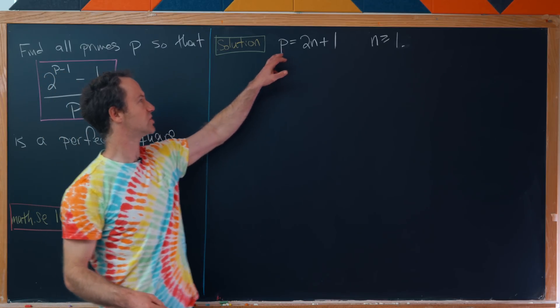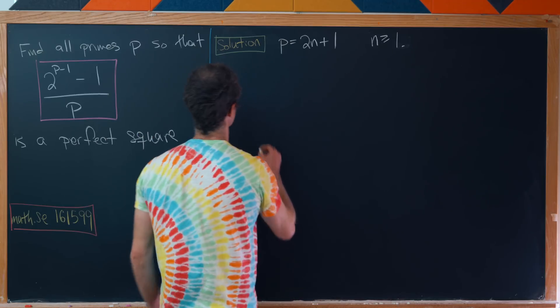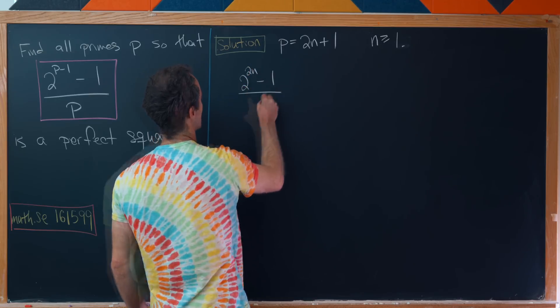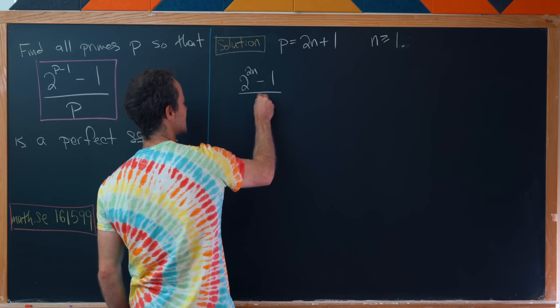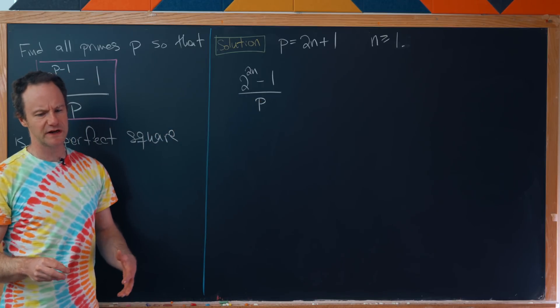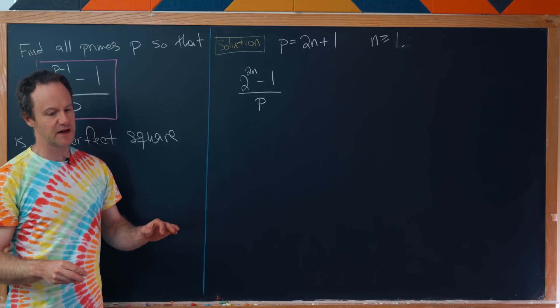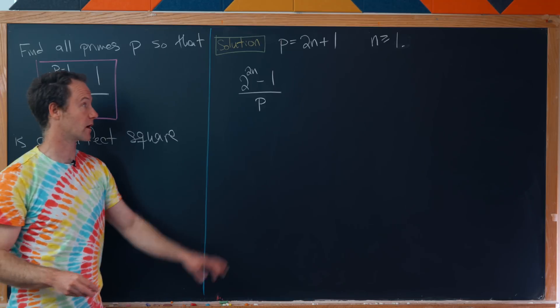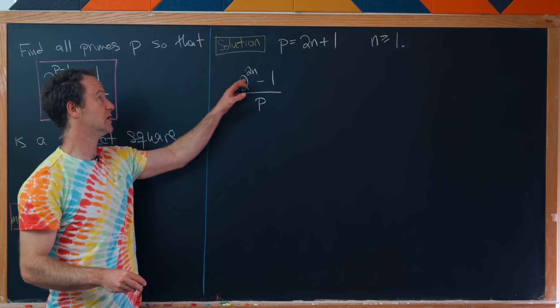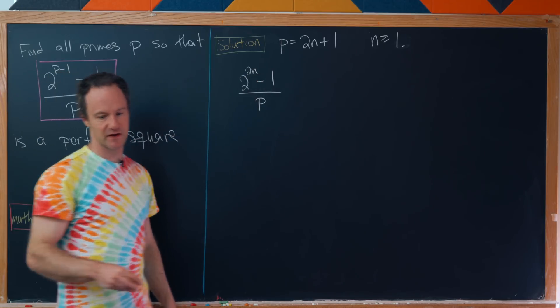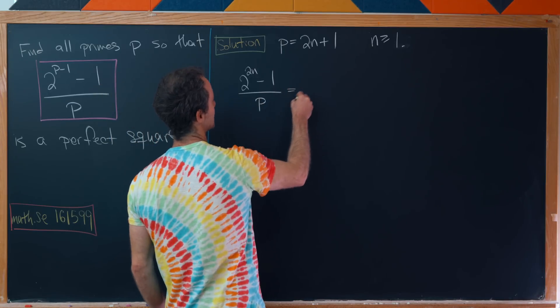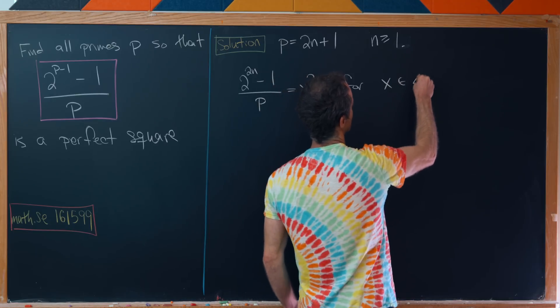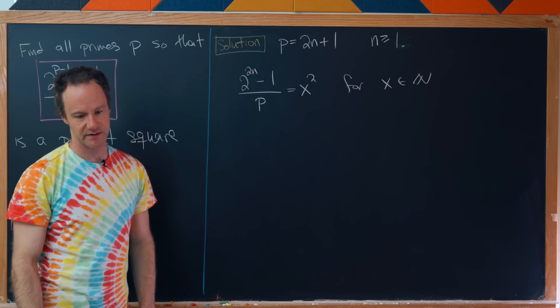Now let's push this version of p into our equation. That's going to give us (2^(2n) - 1)/p. I'm going to leave the denominator as p. It's helpful to replace this one because now we see this thing up here is a perfect square: 2^(2n) is (2^n)^2. This equals x^2 for x which is some natural number.